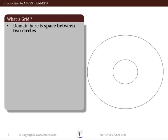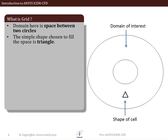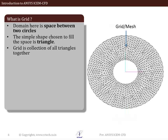To elaborate more on the definition of a grid, refer to the figure on right hand side. In this case, the domain of our interest in which we want to solve the governing equations is the region between two concentric circles. For creating the grid, we have selected a simple triangular shape for a subdomain or a cell. After completion of grid generation process, the domain is filled with set of triangles.